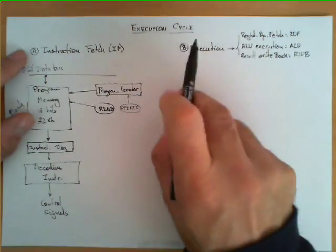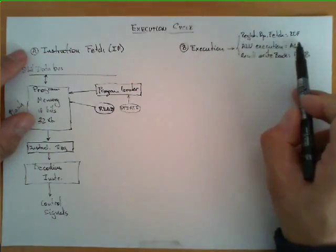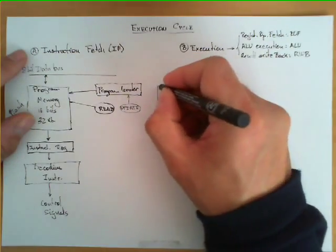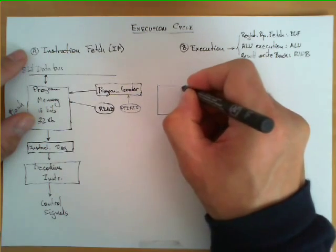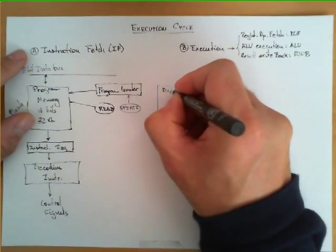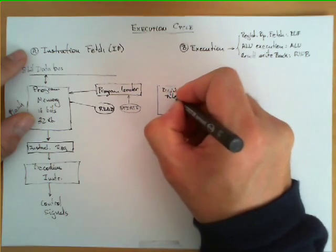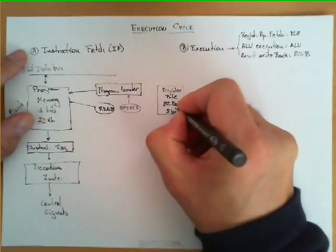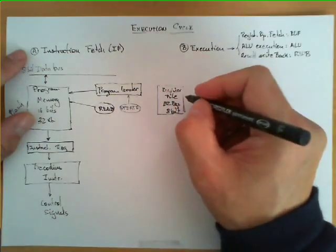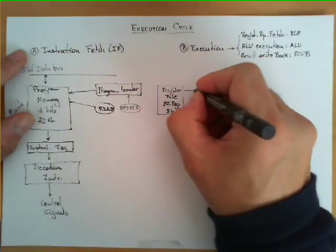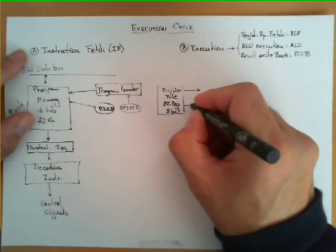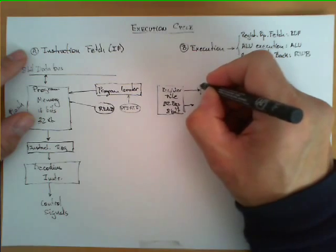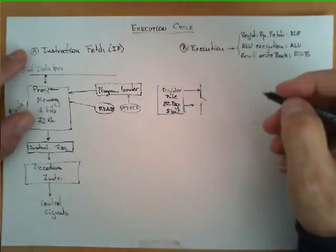What occurs in the first sub-stage of the execution stage — register operand fetch — is basically that the register file, which has 32 registers of 8 bits each, is accessed and two operands, or sometimes only one, come out of this block and are going to be used by the following block.